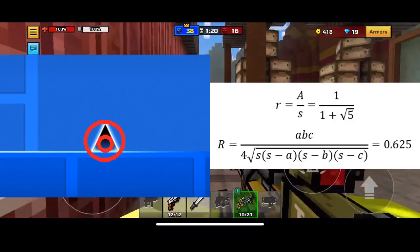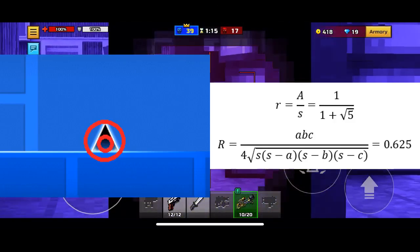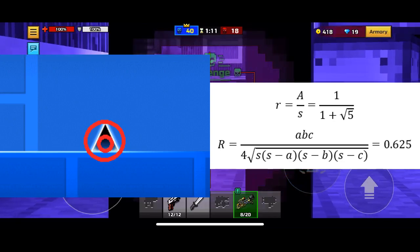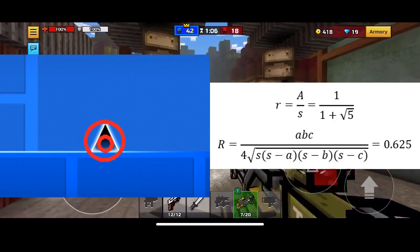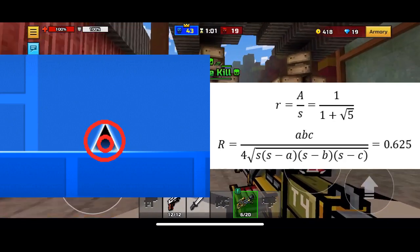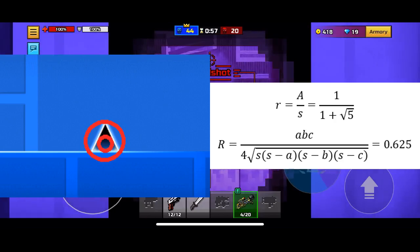The radius of the incircle of the triangle is equal to the area of the triangle divided by the semi-perimeter which is 1 over 1 plus square root of 5. The radius of the circumcircle is 0.625. You can probably already calculate the values of those circles such as the diameter and the circumference yourself given these values since the formulas for those are basic enough.